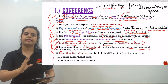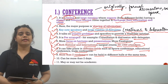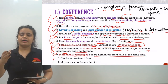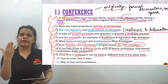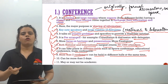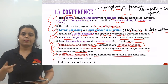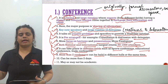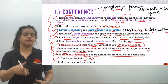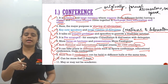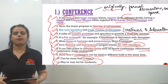The eighth feature: it takes place in different fields — sports conference, educational conference, trade conference. Conferences are not only educational; they can happen everywhere. The ninth point: more than two conferences can be held in different halls at the same time — for example, biology in one hall, chemistry in another, and a technical conference in a third. The tenth point: it can be more than two days — two to three days. Lastly, it may or may not be academic.